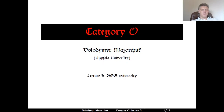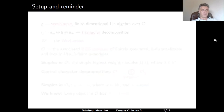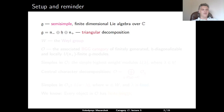Category O, Lecture 5: BGG Reciprocity. Let us start with a setup. We work with a semi-simple, finite-dimensional, complex Lie algebra G with a fixed triangular decomposition.